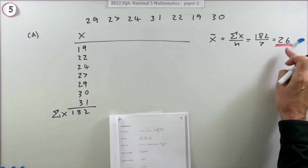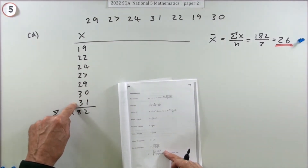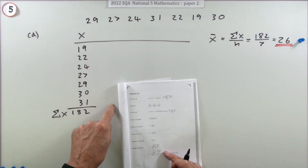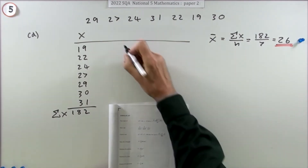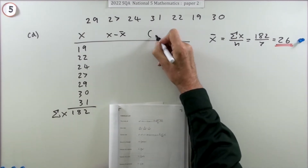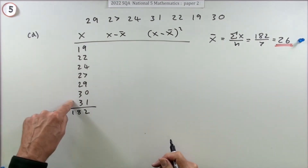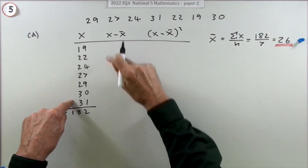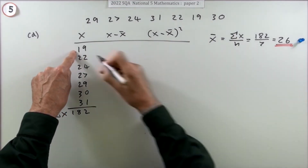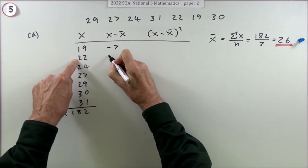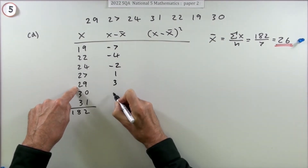Since the mean is a nice number, I'll use the first formula - there's no need to square large numbers when the differences will be small. I want the column x minus x̄. With values in numerical order, the differences follow a nice pattern from negative to positive: seven below, four below, two below, one above, three above, four above, five above the mean.